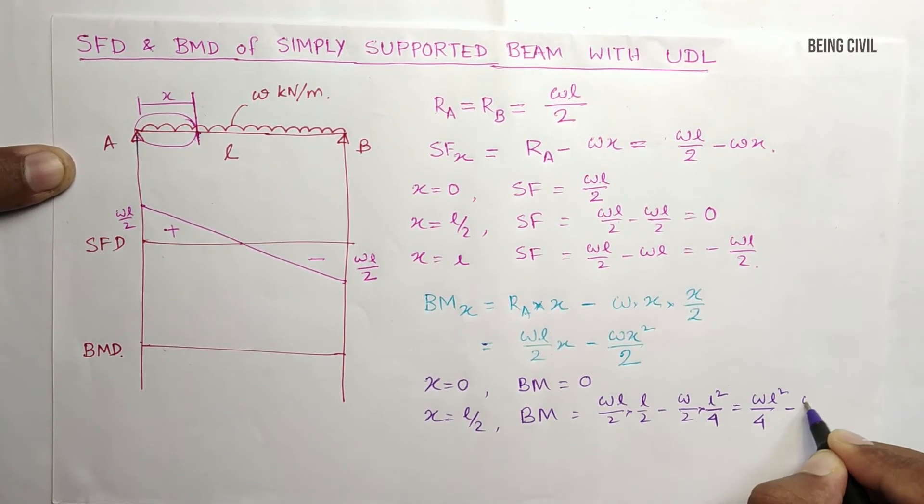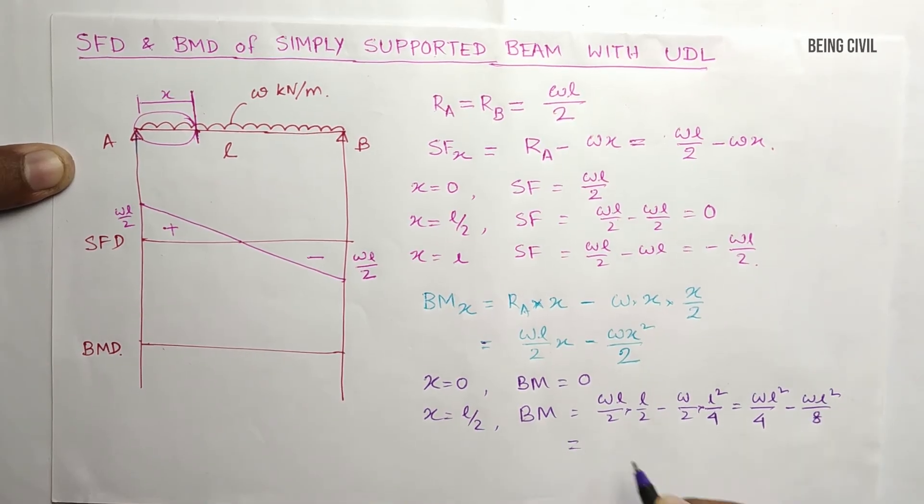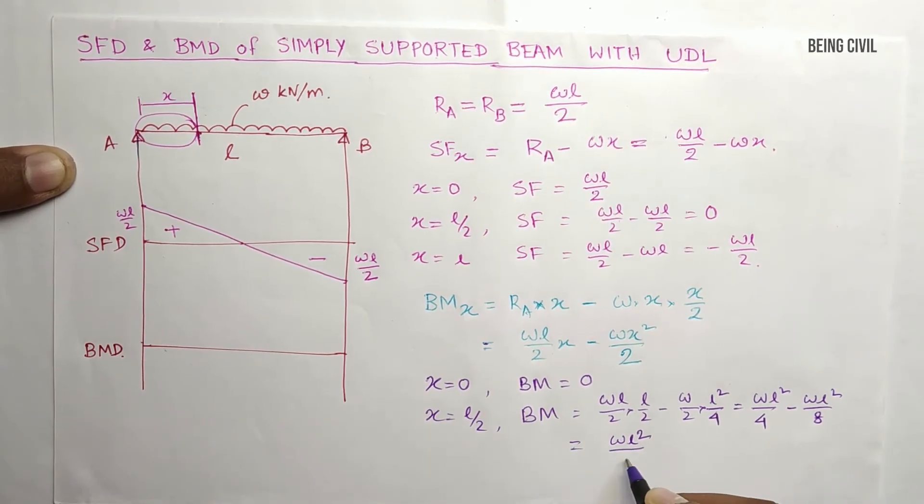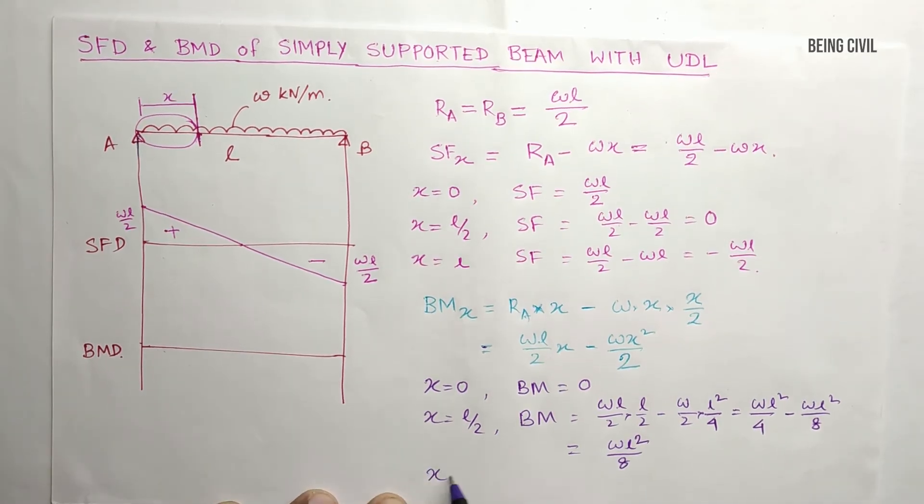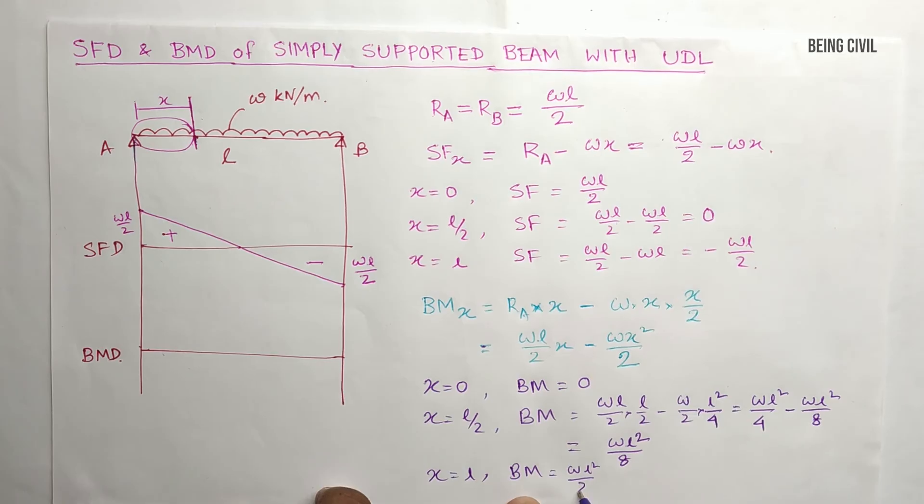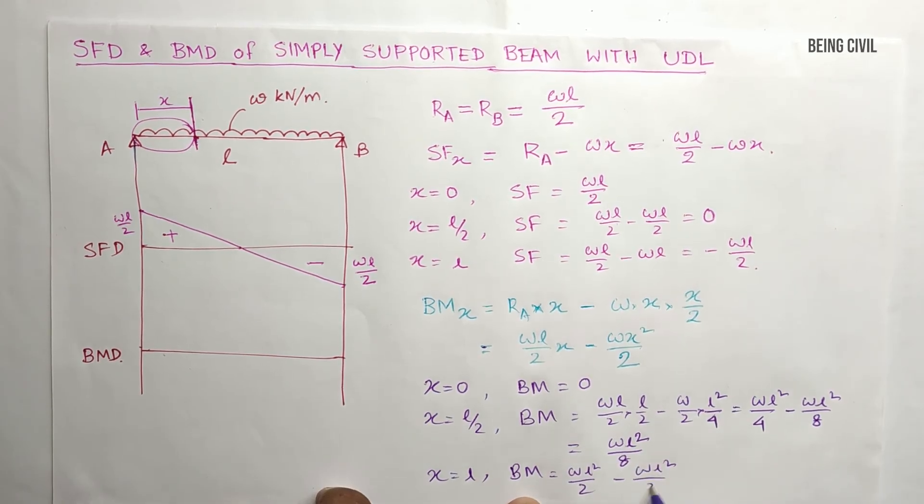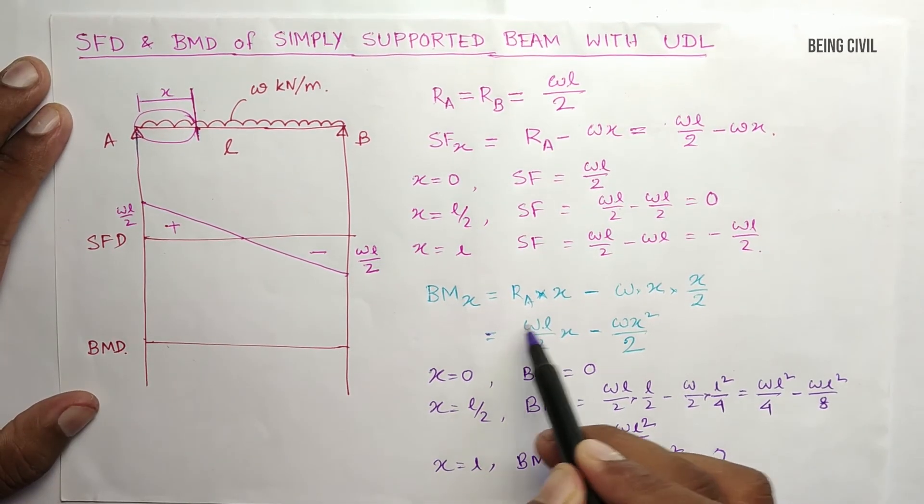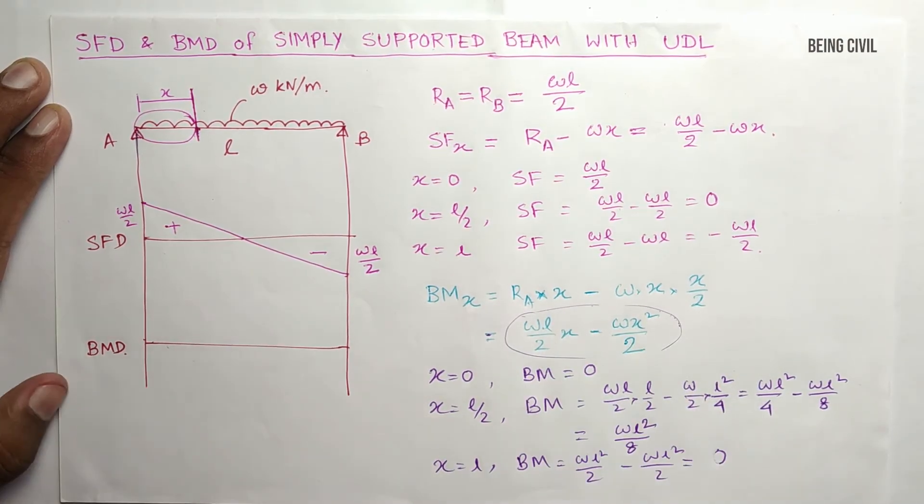At X equal to L, you get bending moment WL square by 2 minus WL square by 2 equals 0. The equation is a parabolic equation.